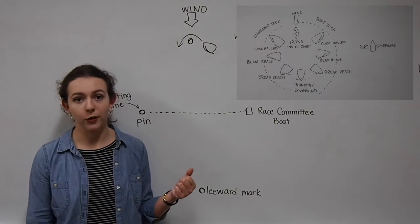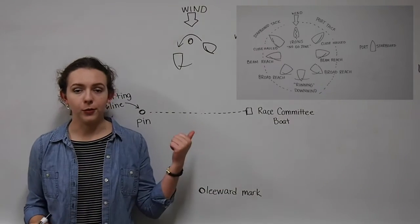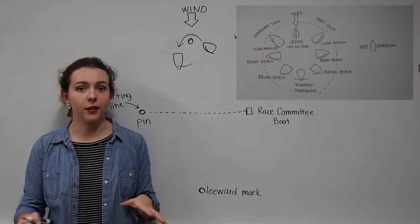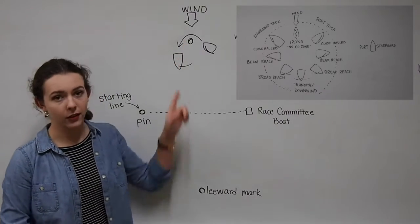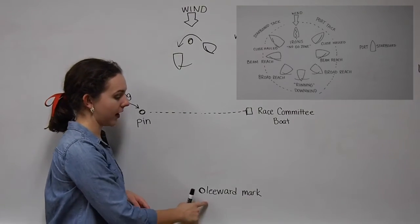After rounding your windward mark, we are going to transition to the downwind leg of the race course. And to transition your boat to this position, you need only to let your sail out to be perpendicular to the wind that's coming from behind you. And at this point, you are going to make a run for the leeward mark.